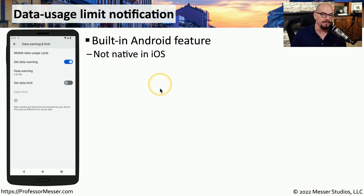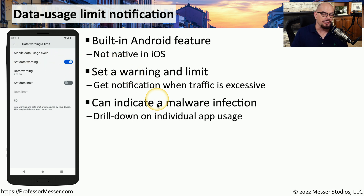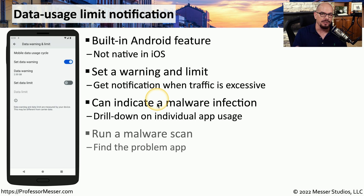If you're using an Android device, it can warn you if it's using a certain amount of network traffic — this is not a feature available in iOS or iPadOS. This allows you to set a warning and set a limit, so if there is an excessive amount of traffic, you may get an early warning that there's a problem by examining data usage. If you receive a warning that you're using a lot of data, it could be malware causing the problem, so you may want to refer back to that report to see exactly what apps are using the most data. Ultimately, you may want to run a malware scan to make sure there's no malicious software running on your mobile device.